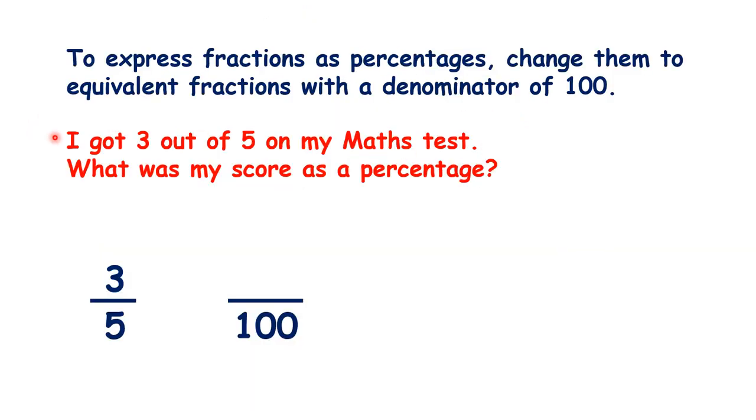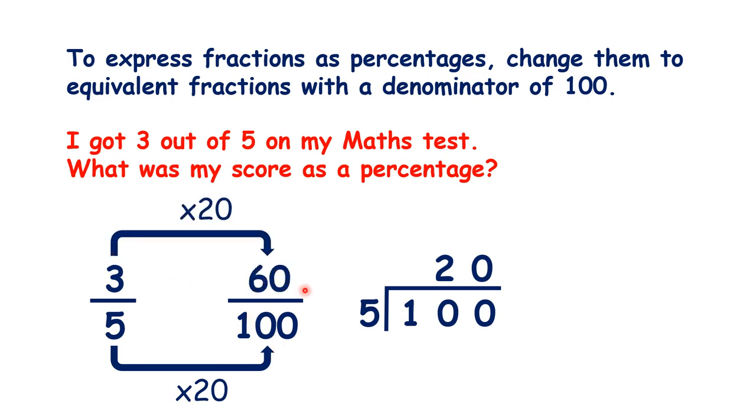Now, how about 3 out of 5, what's that as a percentage? Well, 100 divided by 5 is 20, so 5 times 20 is 100. 3 times 20 is 60, so that's my percentage.